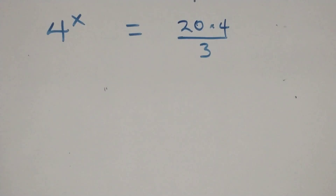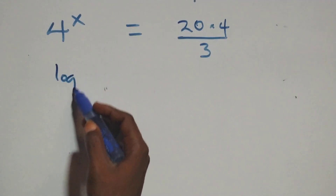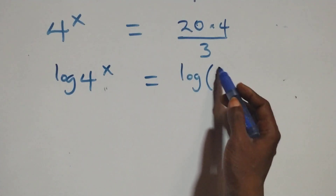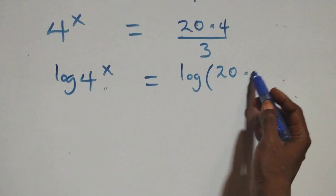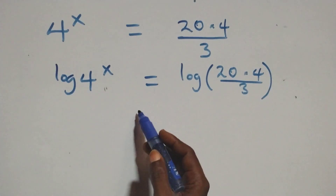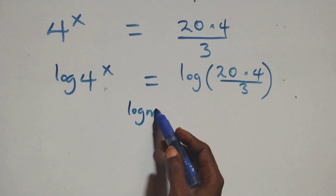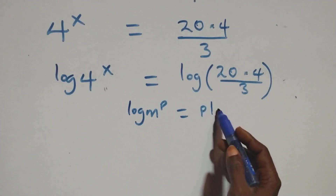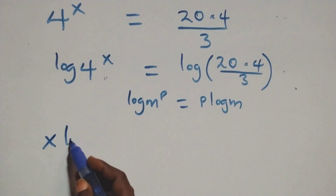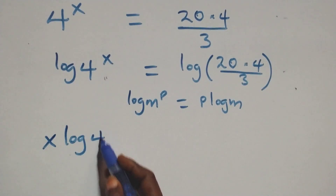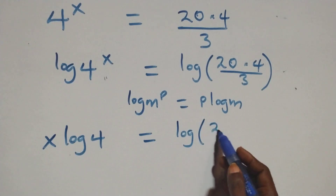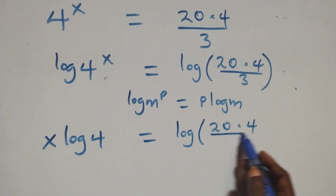Then next step here, we take the log on both sides. We have log of 4 raised to power x equals to log of 20 times 4 over 3. We apply the power rule of logarithm: when we have log m raised to power p, that is the same thing as p log m. So all we have becomes x log 4 equals to log of 20 times 4 over 3.